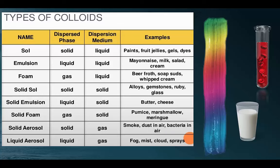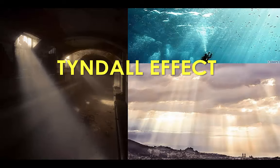Examples of colloids include mayonnaise, milk, salad creams, the froth on top of a beer or soap suds, whipped cream, different types of alloys and gems, butter, cheese, marshmallows, smoke from cigarettes, cars, or fires, fog, mist, clouds, ocean sprays, and blood. For example, in a basement when light comes through and you can see a beam — that's microscopic dust particles bouncing off the light. Salt water is a true solution, but in the ocean with sand and other matter it becomes more like a colloid.